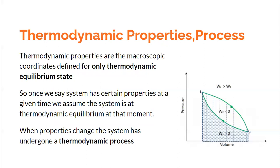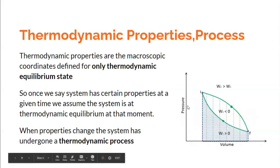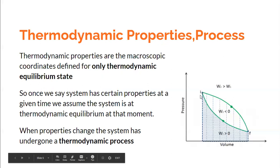We need to be very clear that in thermodynamics we are essentially dealing with thermodynamic equilibrium states. When we say that state i has certain properties — pressure Pi, volume Vi, temperature Ti — we mean that the system is at thermodynamic equilibrium. If it is not at thermodynamic equilibrium, we cannot say the system has those properties. Thermodynamic properties are macroscopic coordinates defined only for thermodynamic equilibrium states, meaning states where there is mechanical, chemical, and thermal equilibrium.